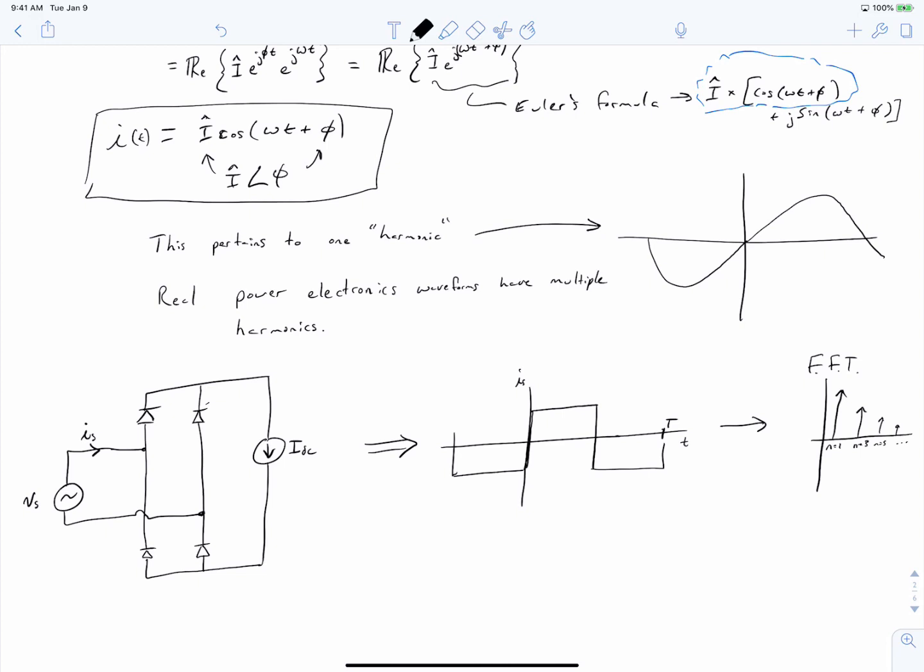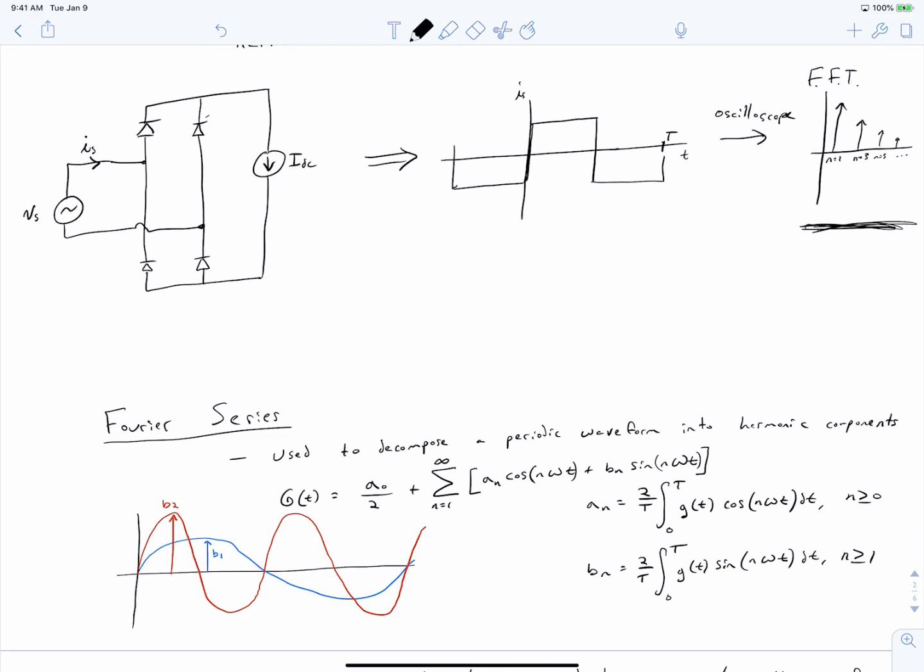So the load is actually a pure current source drawing pure DC. And if you were to graph your input current IS as a function of time, you'd see that it is a square wave. So when we analyze a waveform in the lab, we'll oftentimes plot it with an oscilloscope. And a useful tool is to be able to decompose it into its harmonic content. And the tool that we use with our oscilloscope is called an FFT.